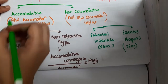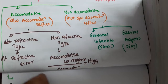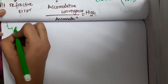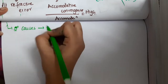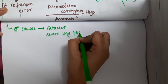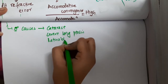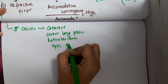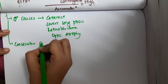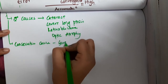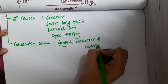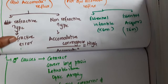Apart from accommodative and non-accommodative causes, esotropia also has secondary causes and consecutive causes. Secondary causes include involvement of cataract, severe long ptosis, retinoblastoma, or optic atrophy. Consecutive causes include surgical over-correction of exotropia.